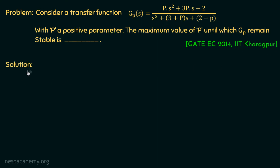In this problem, we are given a transfer function G_P(s) equal to P(s² + 3P·s − 2) over (s² + (3 + P)·s + (2 − P)), where P is a positive parameter. We need to find the maximum value of P until which G_P remains stable. To comment on stability, we apply the Routh-Hurwitz criteria, which requires forming the Routh array. To form the Routh array, we need to determine the characteristic equation.